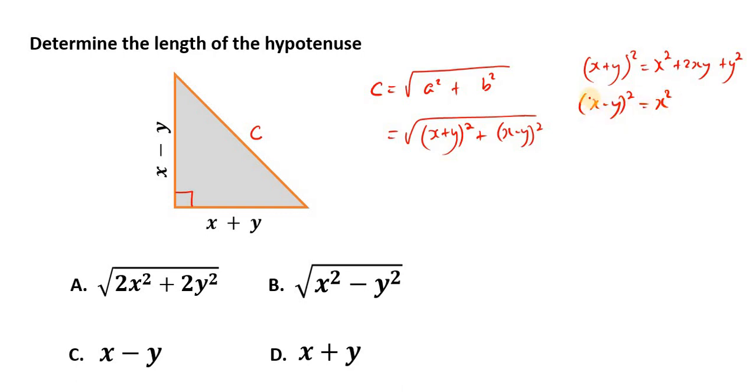Then multiply 2 by the first term, which is 2X. And 2X times the second term, in this case negative Y, gives negative 2XY. Then we square the last term, which is negative Y. That means negative Y times negative Y, which is positive Y squared.